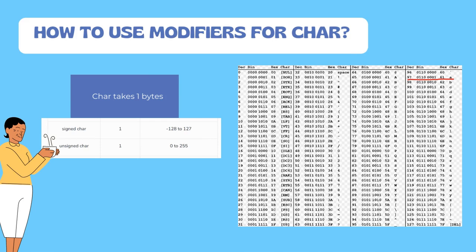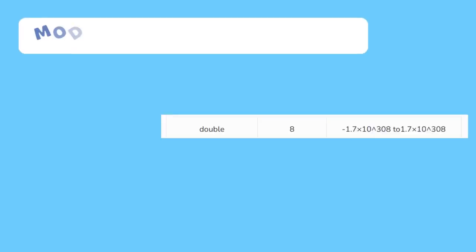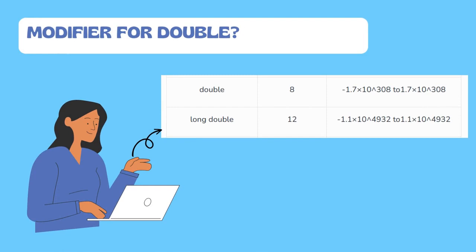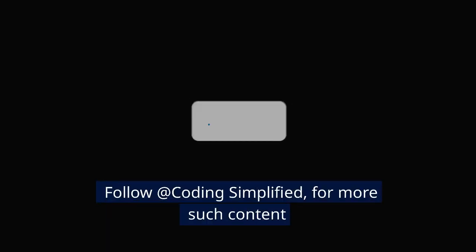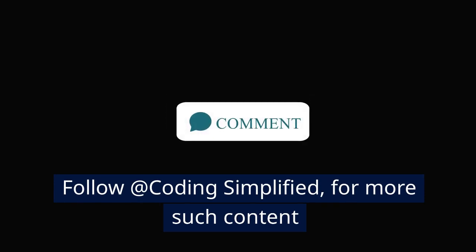If we declare a variable char x = 'a', it does not mean the memory block is storing the character 'a' directly. It is actually storing the ASCII value for 'a'. In the ASCII table, every character has a unique value — for 'a' it is 97 — so the binary representation of 97 is what is stored in memory. For double, we can only use the long modifier. Adding long before double increases the size from 8 bytes to 12 bytes, which increases the range of the double.